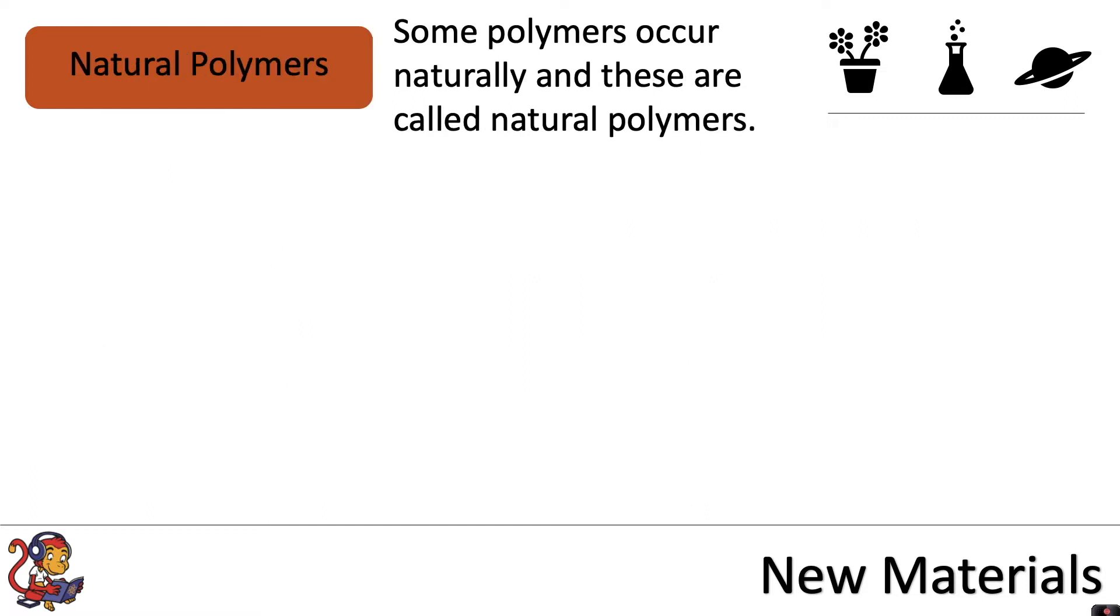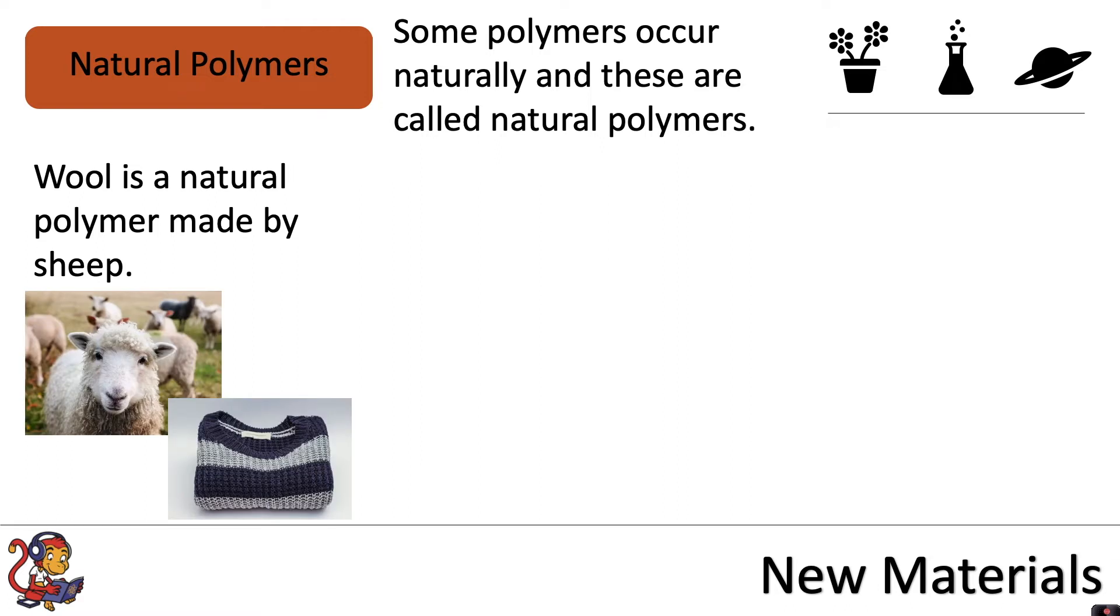Some polymers occur naturally and these are called natural polymers. Wool is a natural polymer made by sheep, and wool is a really useful material used in clothing.